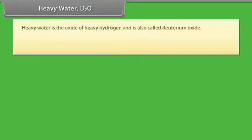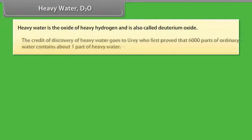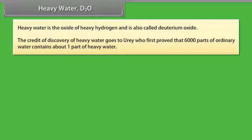Heavy water D2O: Heavy water is the oxide of heavy hydrogen and is also called deuterium oxide. The credit of discovery of heavy water goes to Urey, who first proved that 6000 parts of ordinary water contains about one part of heavy water.